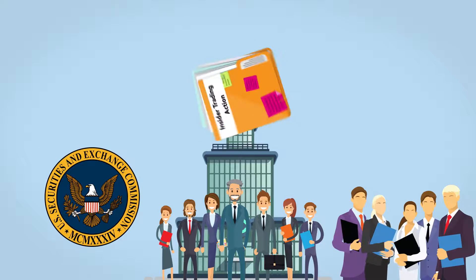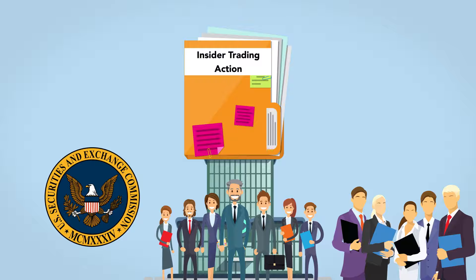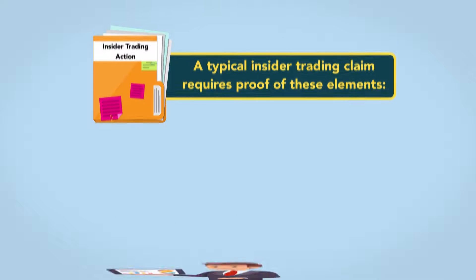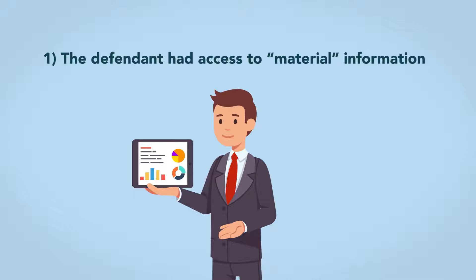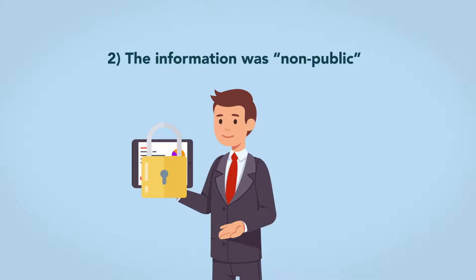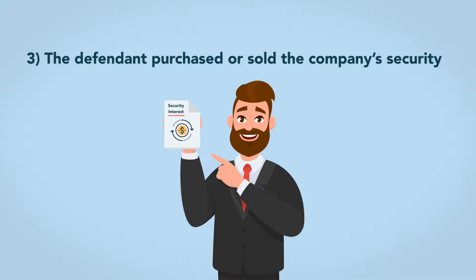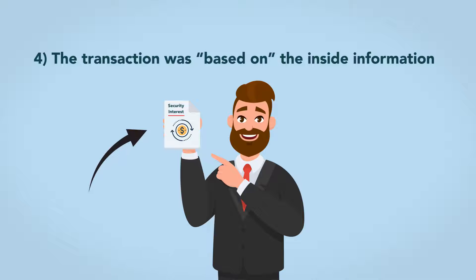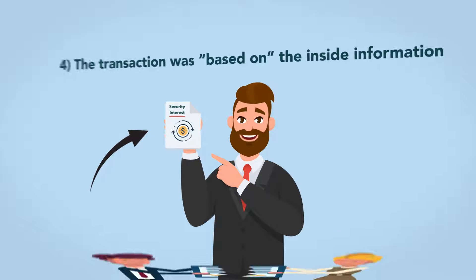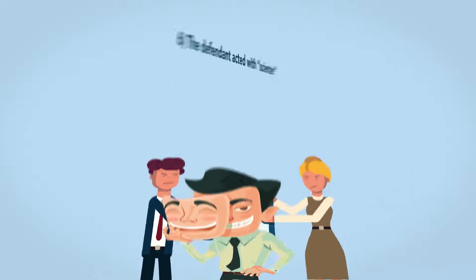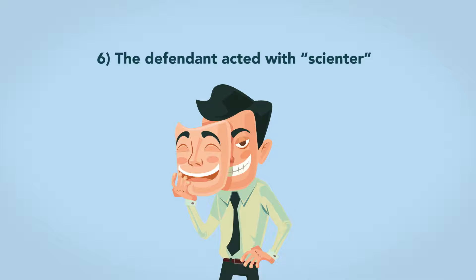The SEC, the company, or a shareholder in the company may pursue a claim for insider trading. A typical insider trading claim requires proof of six elements. One, the defendant had access to material information. Two, the information was not public. Three, the defendant purchased or sold the company's security. Four, the transaction was based on the inside information. Five, there was a breach of the duty of trust or confidence. And six, the defendant acted with scienter.